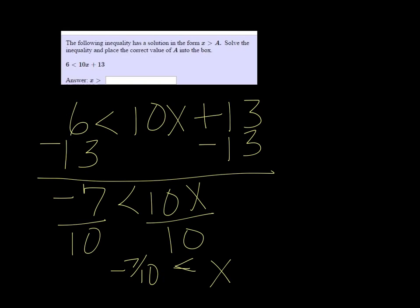We want to put it in the form x is greater than, so we just need to flip it around. So x is greater than negative 7 tenths. So in the box we would just put negative 7 over 10.